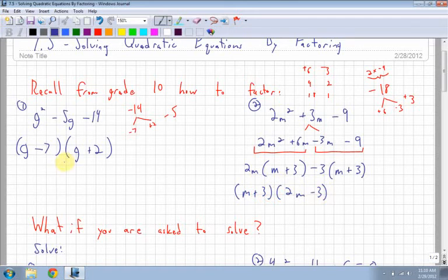Simple trinomials, you don't have to decompose the middle term. Difficult trinomials with a number in front of the m squared that you can't factor out, you have to use the decomposition method. Multiplying the end two numbers, splitting the middle term up, factoring by grouping, and so on.